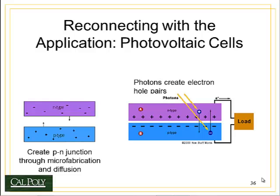When an n-p or p-n-type junction is struck by a photon, the energy excites the electrons and the holes into the valence band and causes a current to be transferred through the load and back into the solar cell.